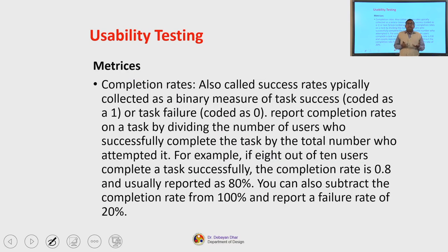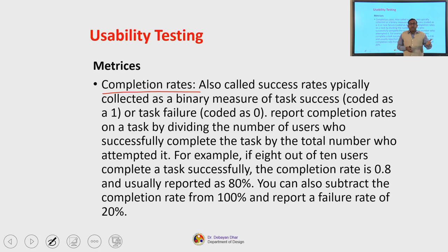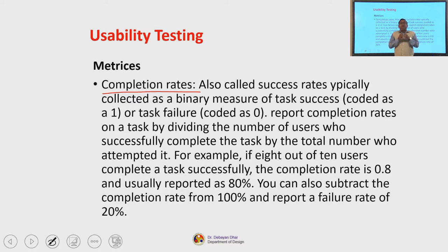Now, some of the matrices that are extensively used in usability testing - some we have discussed earlier, and we will talk about some in detail in this lecture. The first most important matrix is completion rates. What are completion rates? Your interface is a medium to complete a task - your user wants to reach a goal and complete a task, that is their central objective. A completion rate is about how successfully your samples or end users are able to reach their goal or complete the task.